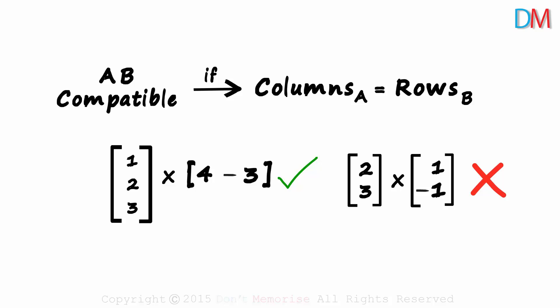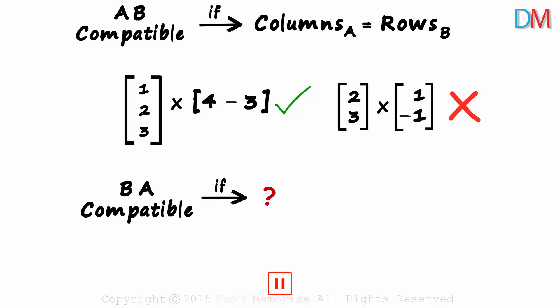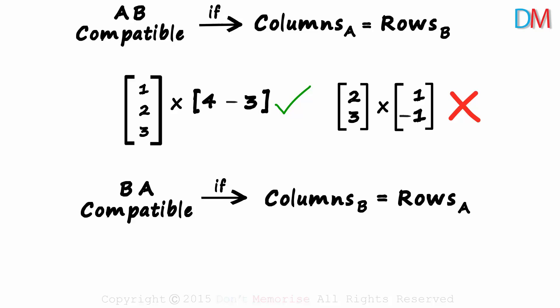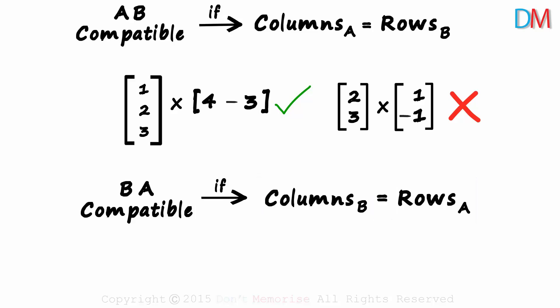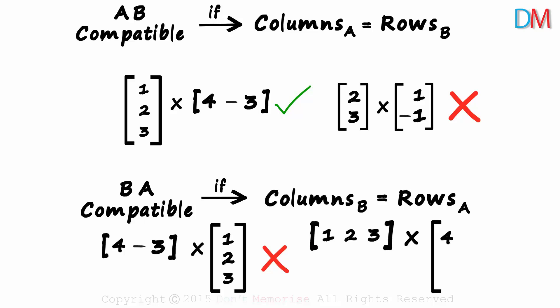Keeping that in mind, I want you to complete the next sentence: assuming A and B are matrices, BA will be compatible if… This will be compatible if the number of columns in B is equal to the number of rows in A. It's the same rule — the number of columns in the first matrix should equal the number of rows in the second. Is this multiplication possible? Two columns, three rows? No, it is not possible. What about this one? Three columns and three rows? Possible!